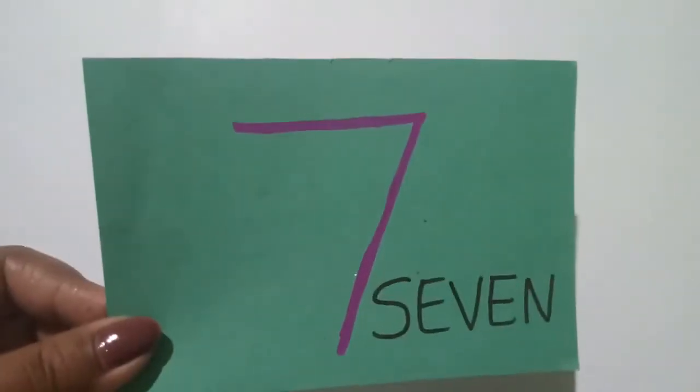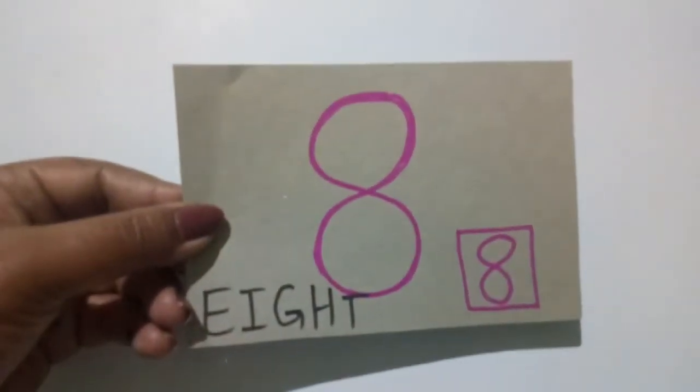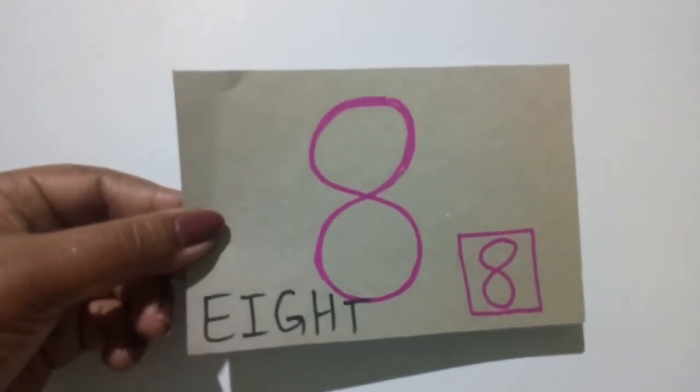Now, next, 7. S-E-V-E-N, 7. Now, 8. 8 is in the box. This is how we write all the numbers, right?